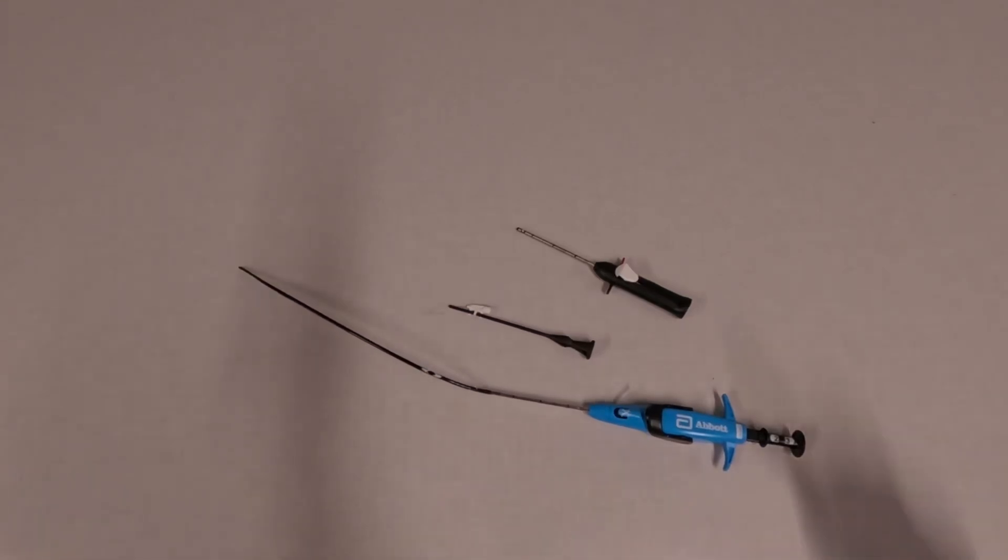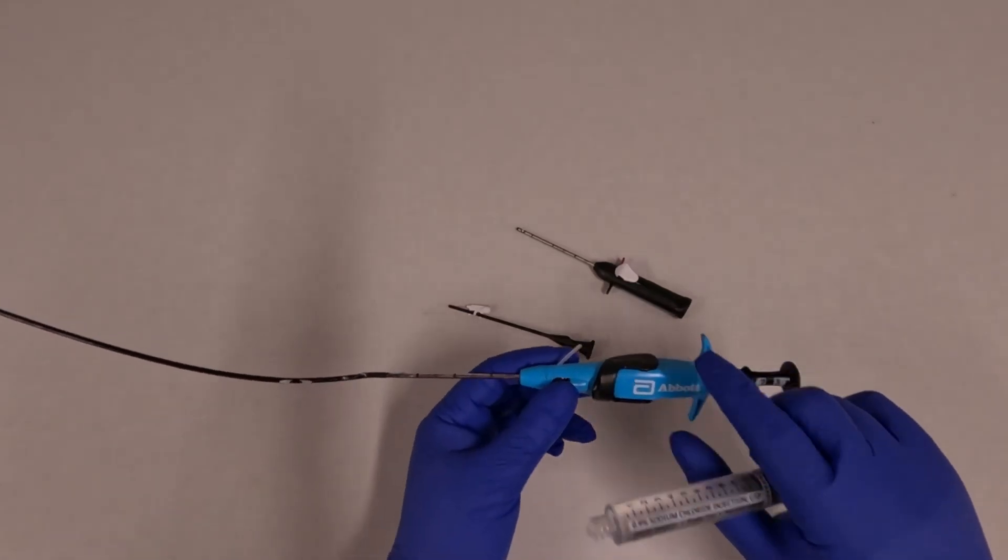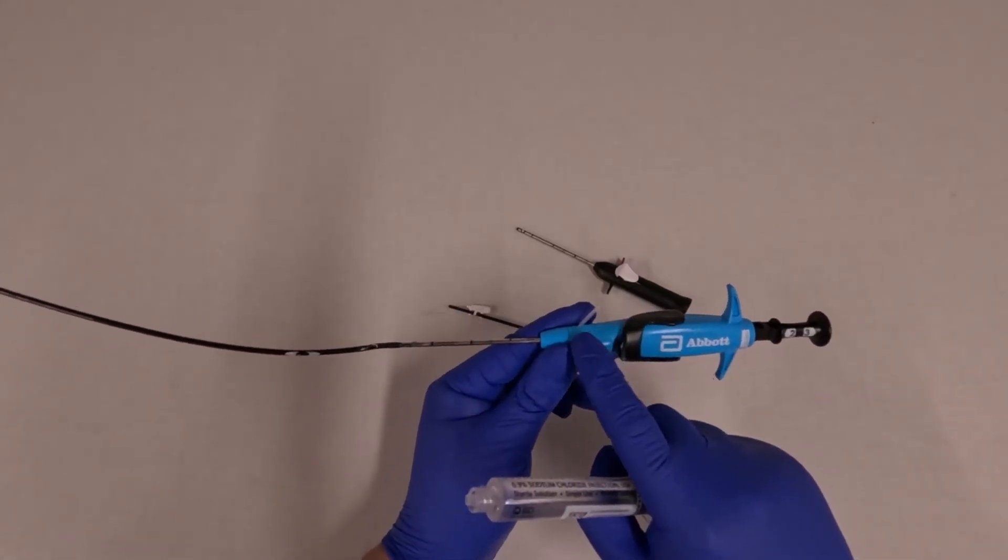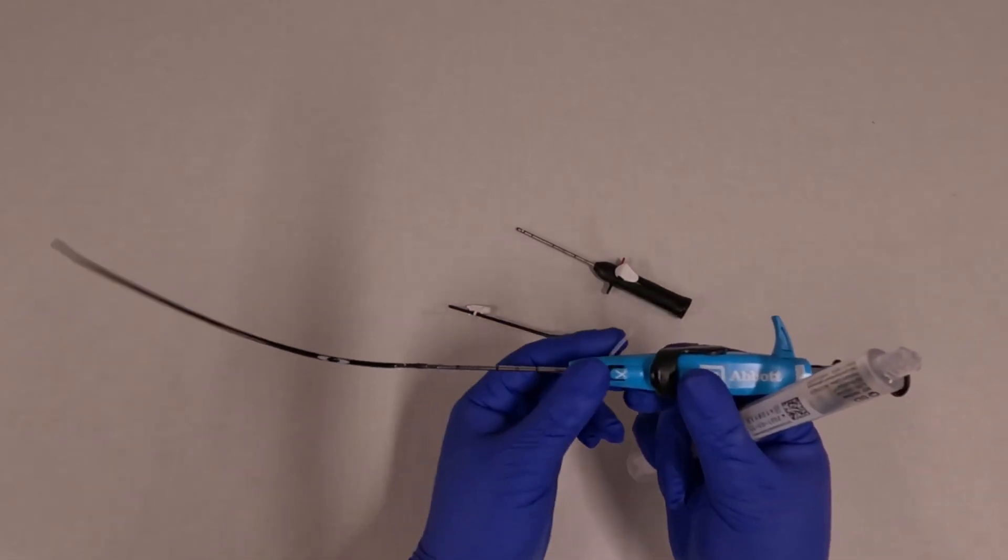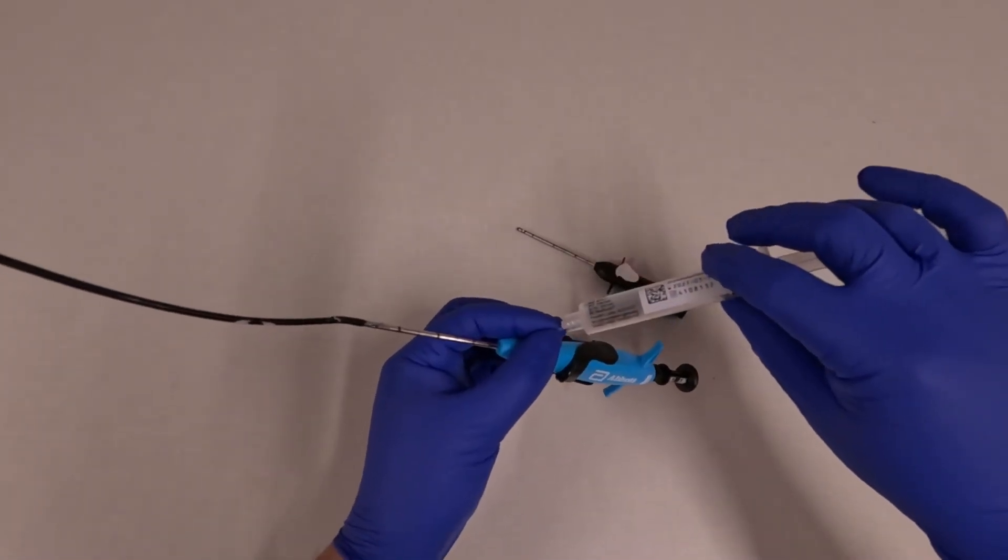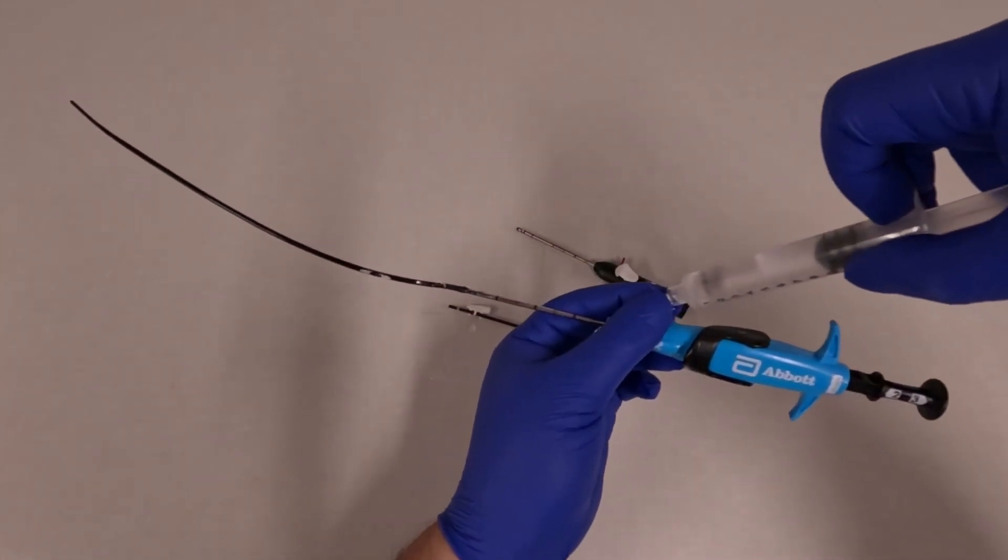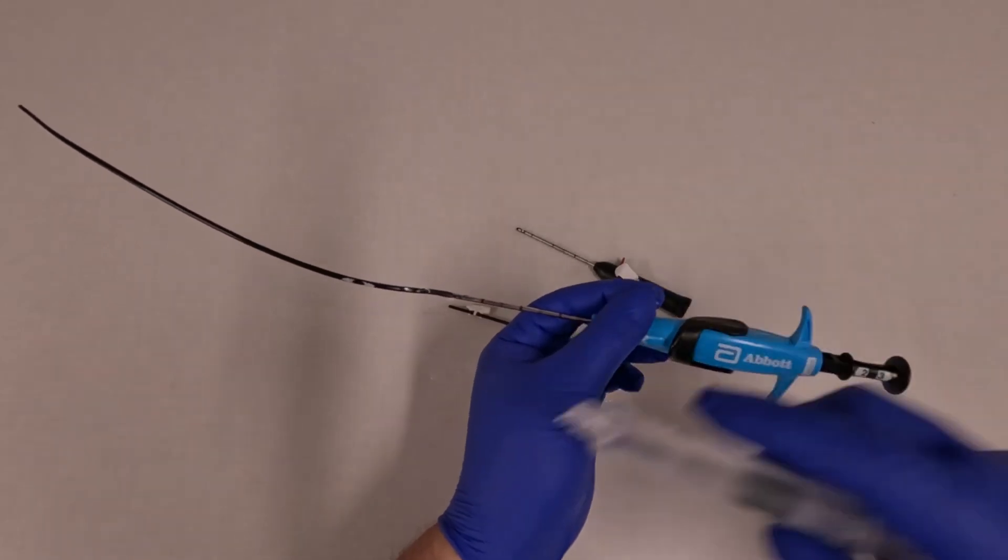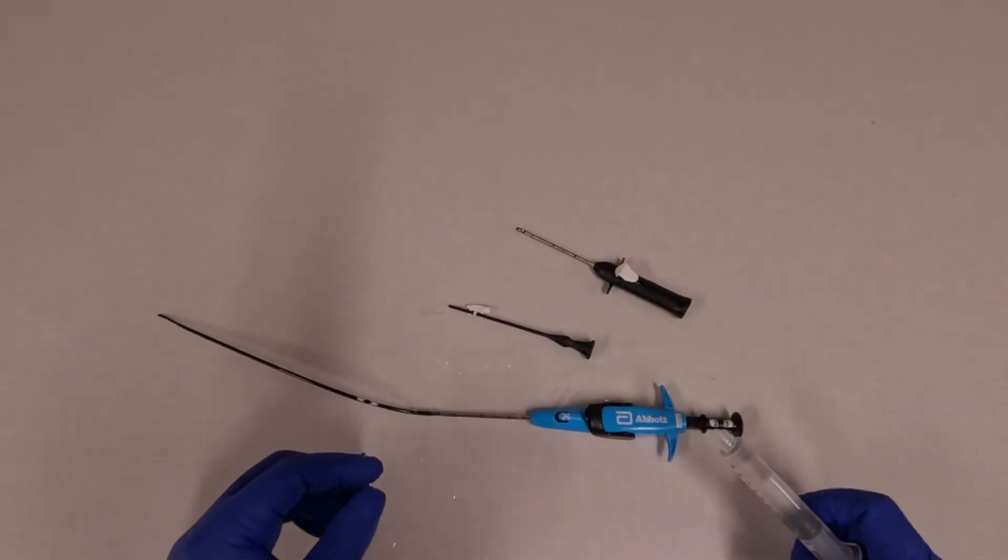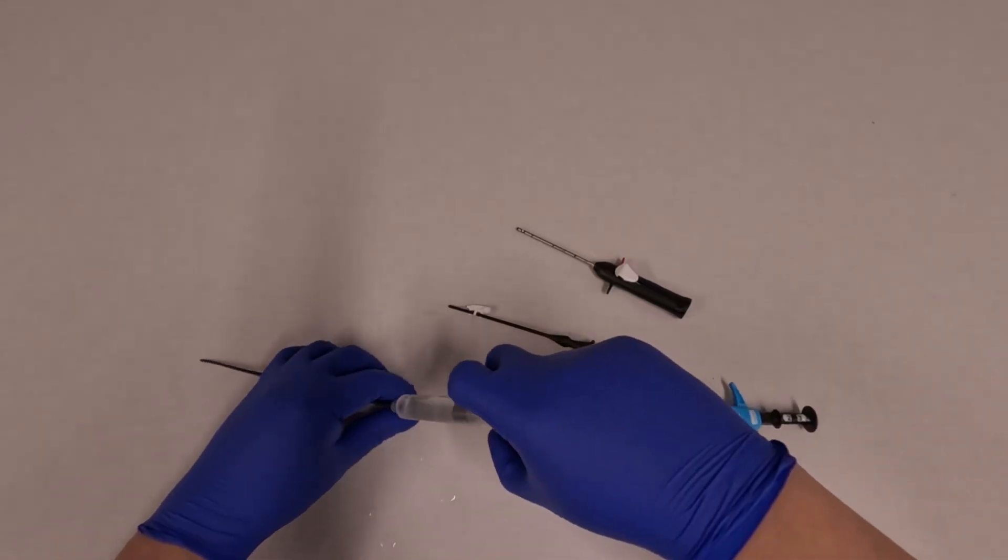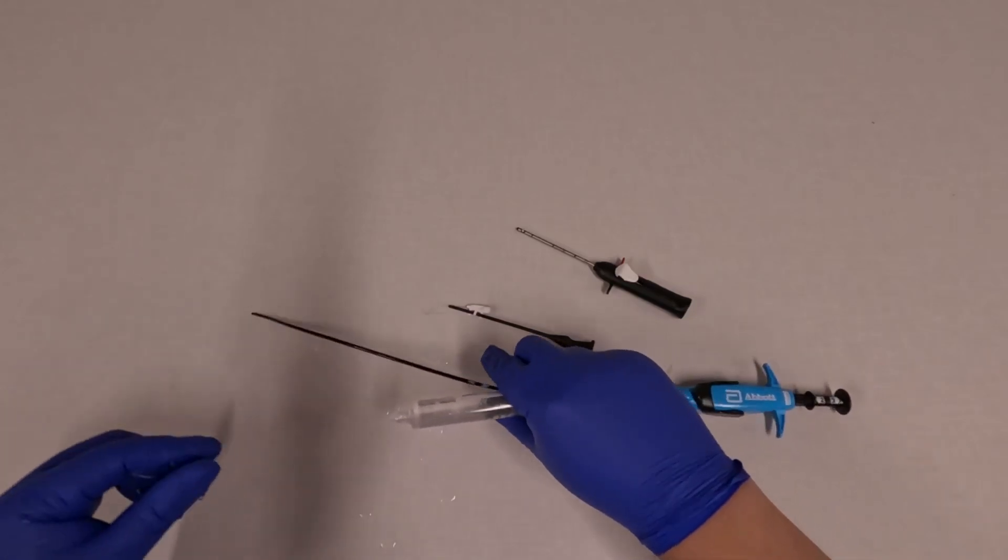To prep the device you want to get saline in a syringe and flush through the side port. This side port connects to the lumen of the device. You can see when you inject there's fluid that comes out of the hole. You also want to take a 4x4 or just wet the device itself. This activates the hydrophilic coating.